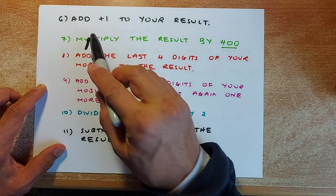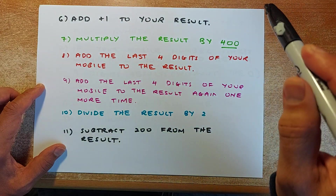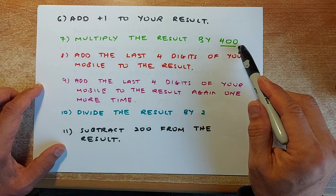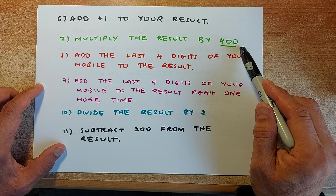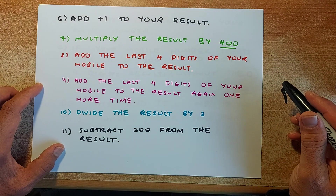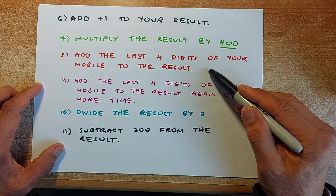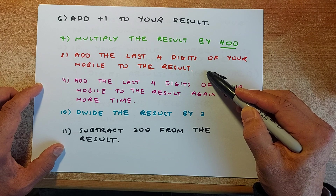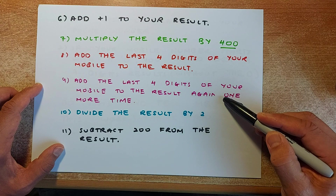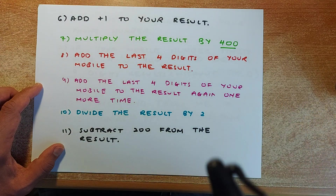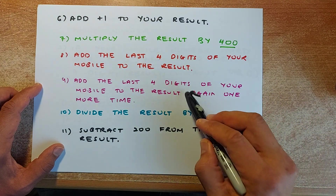Next step: add 1 to your result — don't forget your equals sign. Once you get that, multiply the result by 400. A lot of calculation, but you will be amazed by how accurate this is going to be. Then you are going to add the last 4 digits of your mobile to the result. And then add the last 4 digits again — so you add the last 4 digits twice.